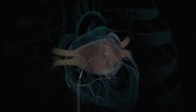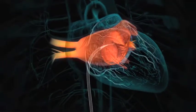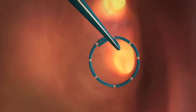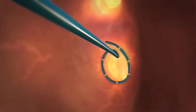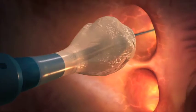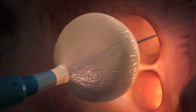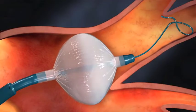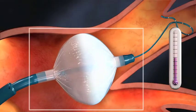Cryoablation refers to a procedure in which we use catheters — like little straws through the veins of the body — to eliminate electrical circuits in the heart that are causing a problem for a patient. Cryo refers to delivering very cold temperatures through these catheters to affect these electrical circuits. The temperatures are extremely cold, well below freezing, so essentially we're freezer burning these areas.